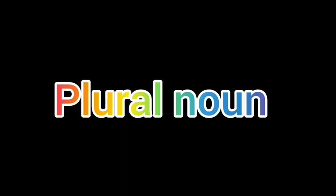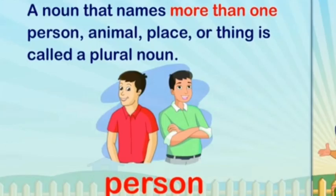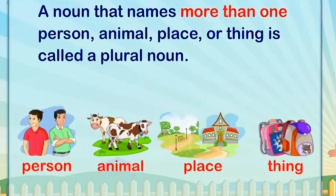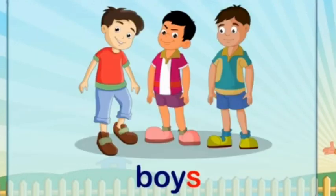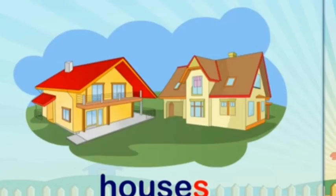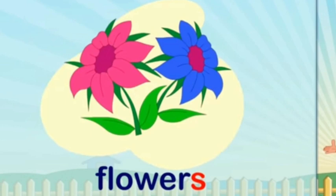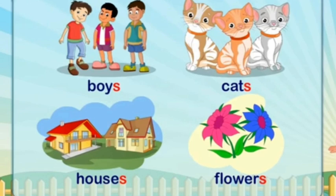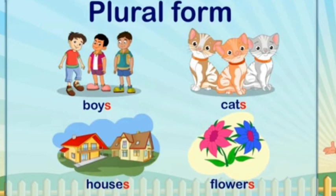Now let's see plural noun. A noun that names more than one person, animal, place, or thing is called a plural noun. For example: cats, houses, boys — cats, houses, and flowers are the plural forms of these nouns.